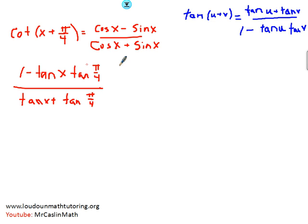Well, pi over 4 is going to make this sum formula nice because pi over 4, we know it's just 1. So basically what's going to happen is when we simplify this, it becomes 1, 1, you get 1 minus the tangent of x over tangent of x plus 1.